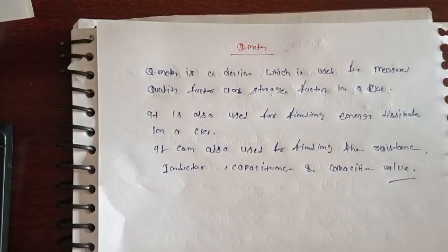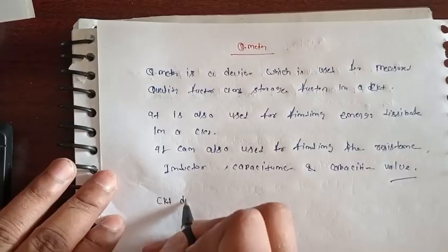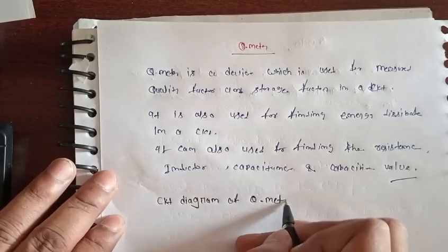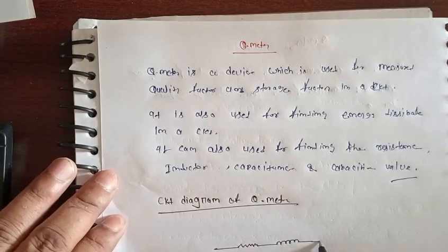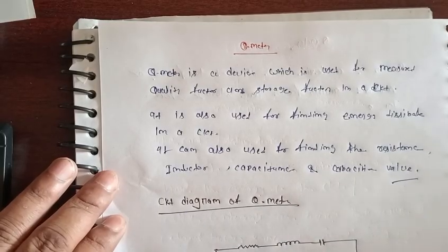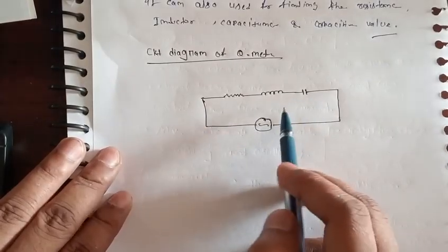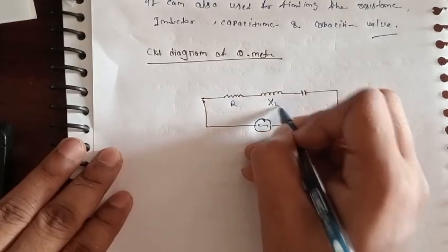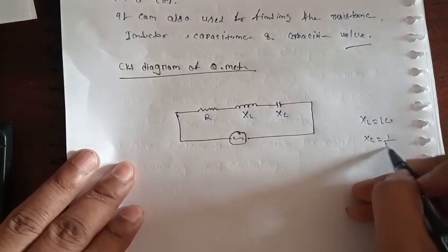Now we will see the very basic diagram of Q-meter. This is the circuit diagram of Q-meter. This is resistance. This is inductive reactance. This is capacitive reactance. We know that XL is equal to L omega, and Xc is equal to 1 by C omega.